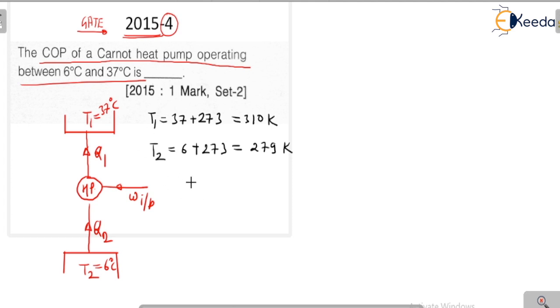That means for that question, you have to write your COP value. And COP of heat pump is nothing but T1 divided by T1 minus T2. So for that question, you have to write your T1 value, which is 310, divided by your T1 value, which is again 310, minus T2 value, that means 279. So you have to find your COP value for a heat pump is nothing but 10, and that will be your standard answer for that question.